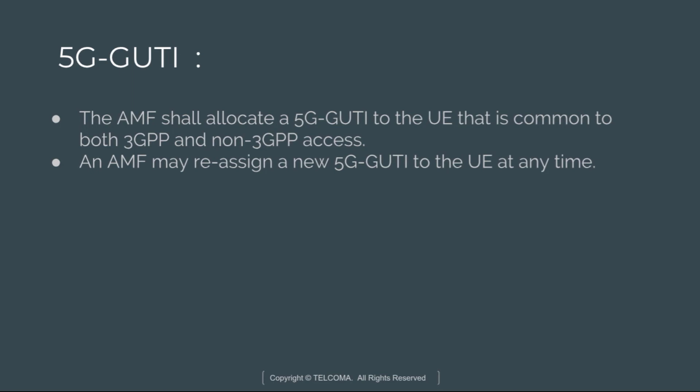Next is the 5G Globally Unique Temporary Identifier, or 5G-GUTI. The AMF shall allocate a 5G-GUTI to the user equipment that is common to both 3GPP and non-3GPP access. It shall be possible to use the same GUTI for accessing both 3GPP and non-3GPP access security contexts within the AMF for a given UE. The AMF can reassign a new 5G-GUTI to the user equipment at any time.